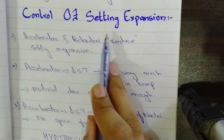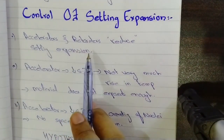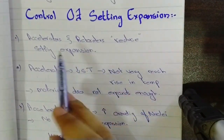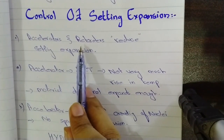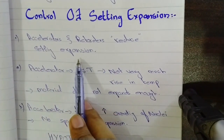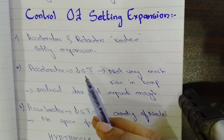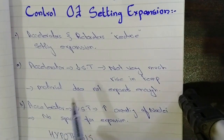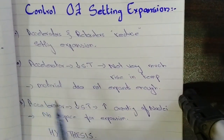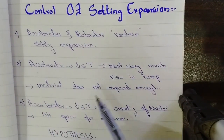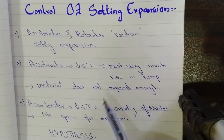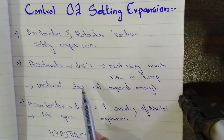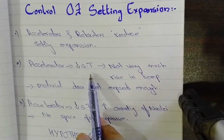Now the control of setting expansion. As mentioned earlier, accelerators and retarders can affect the setting time and they can also affect the setting expansion. Both accelerators and retarders act as anti-expansion agents — they reduce the setting expansion. Now how does the accelerator reduce the setting expansion? I have two hypotheses. Note that these are not mentioned in the book; this is only my way of teaching and understanding the topic. Number one hypothesis is: accelerator decreases the setting time, and as the setting time decreases, there is not enough rise in temperature.